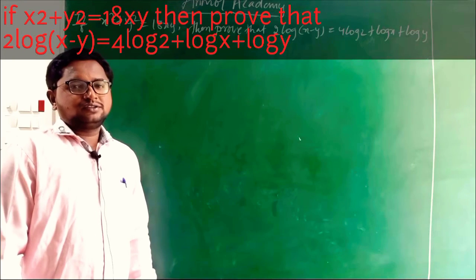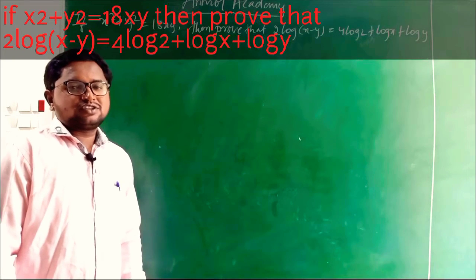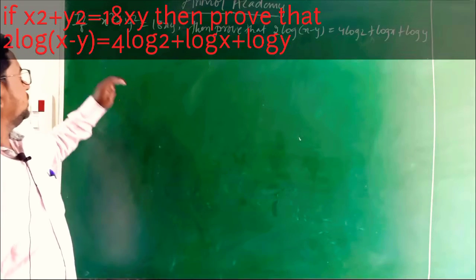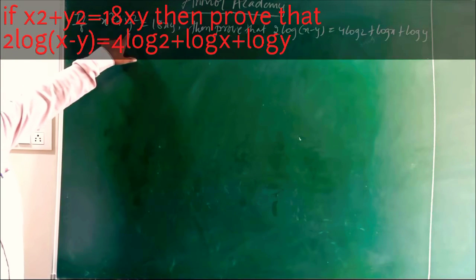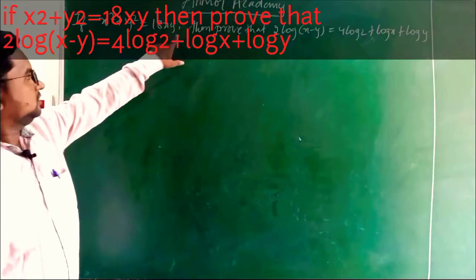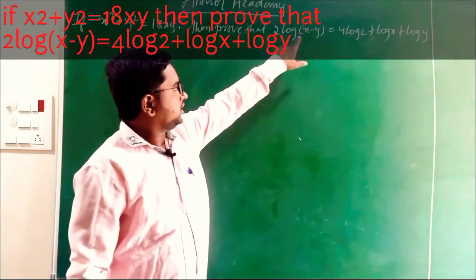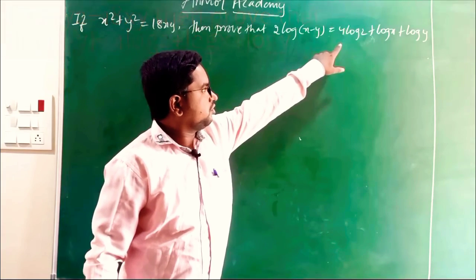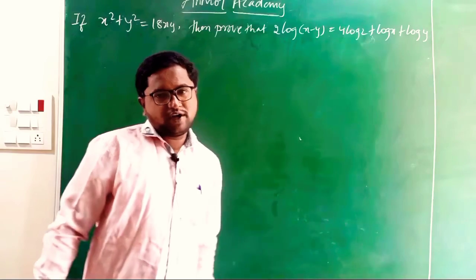Welcome to Animal Academy. Today we will start the first chapter, Real Numbers. One very important question: if x² + y² = 18xy, then prove that 2 log(x − y) = 4 log 2 + log x + log y.